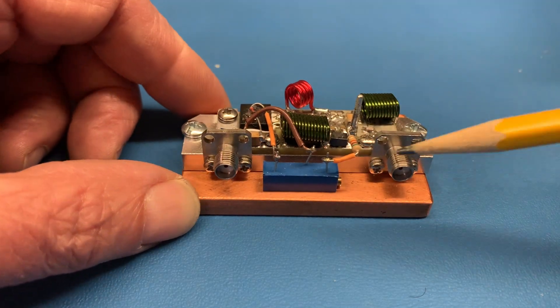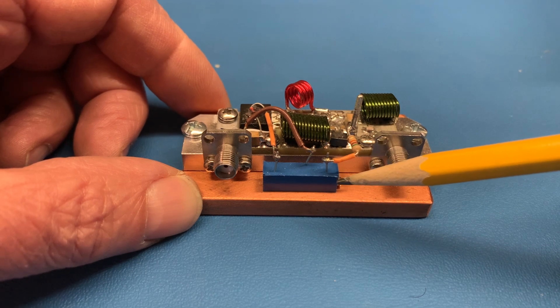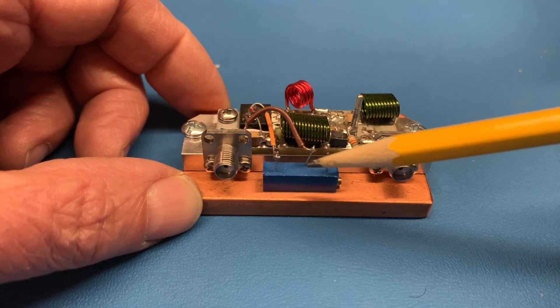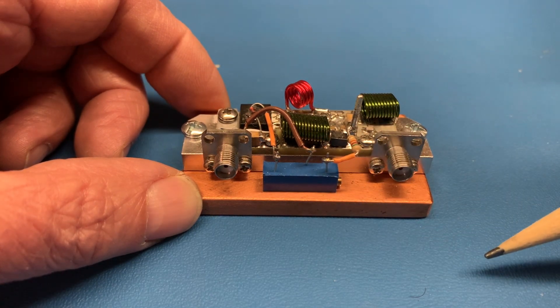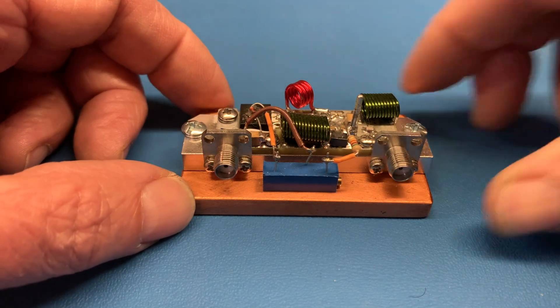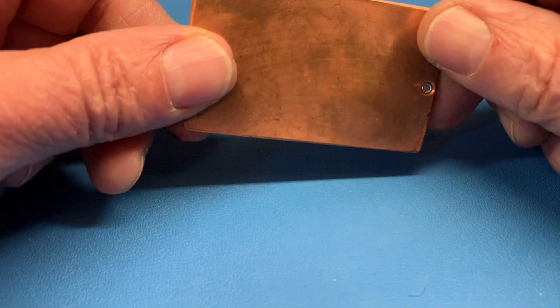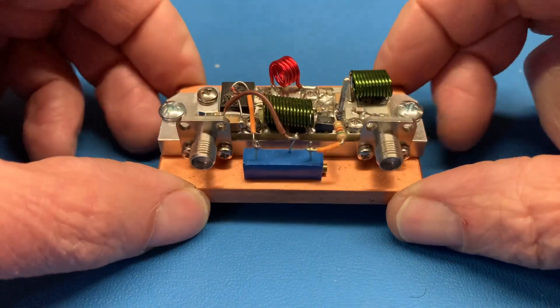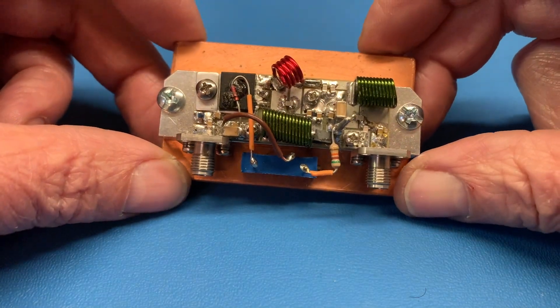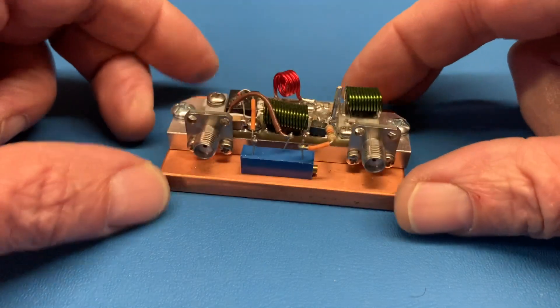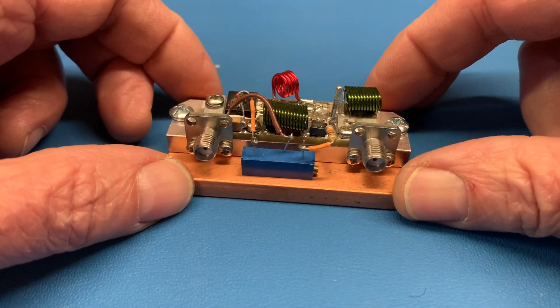On the front here there's just a, I think it's a 10k pot, and this is the adjustment for the biasing current on it. I have just for testing this mounted on a really beefy piece of copper. It probably wouldn't be good for a really long QSO but it's enough to get me through some of the testing.